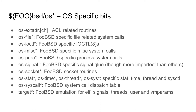The FreeBSD-specific bits consist of a long list of os_*.h and .c files that implement all the different system calls and ioctls. There are also things I'd characterize as ABI issues: how signals are delivered, the siginfo, mcontext, and ucontext structures, thread details, and process layout — these vary by both architecture and OS. The OS-specific variation lives in these FreeBSD files.